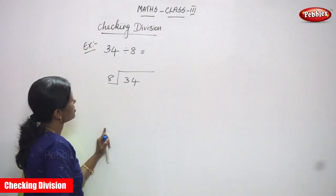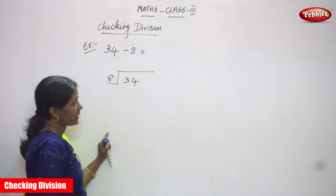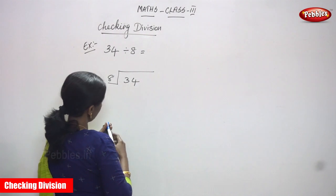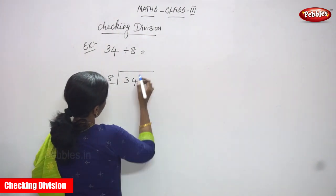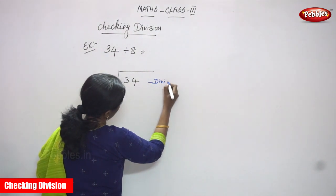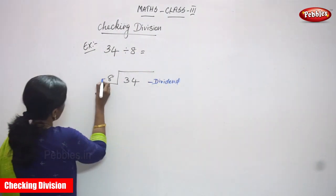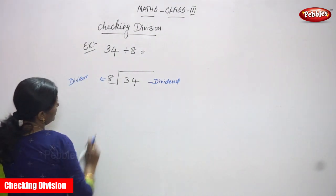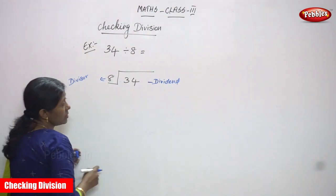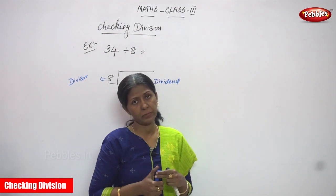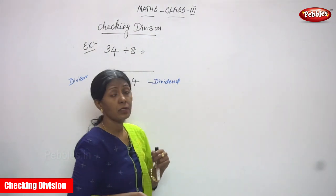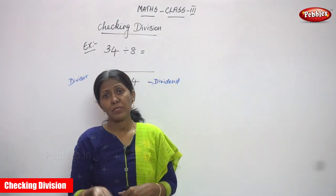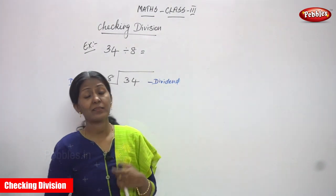Now we are going to see checking division. So 34 divided by 8. You know that 34 is a dividend and 8 is a divisor. I will write dividend. Next one is divisor. So look at this number — 34 is going to be divided by 8. It's long division. 34 is a dividend and 8 is a divisor.